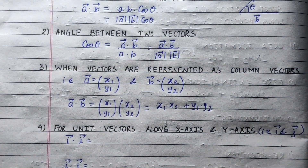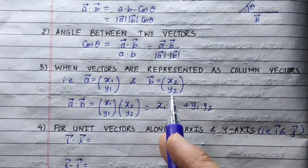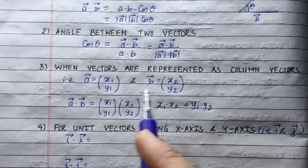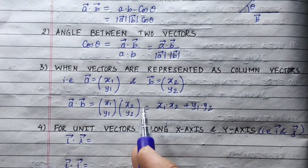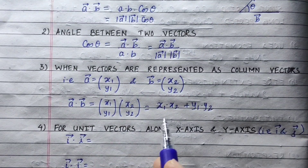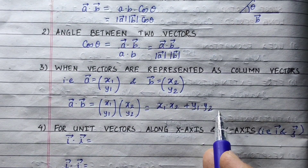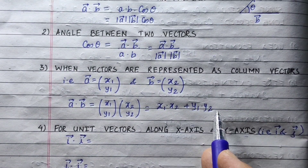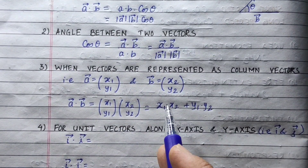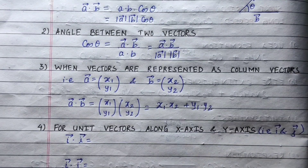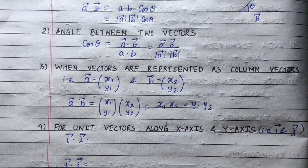This is the column vector representation in coordinate form. The dot product is x1·x2 plus y1·y2. This is the column vector dot product formula.